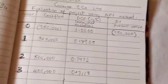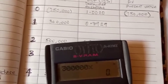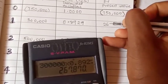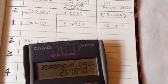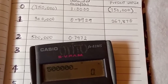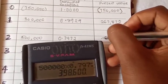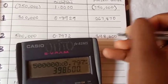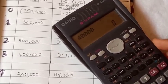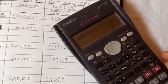750,000 times 1.0 which gave us the same amount. The next is here: year 1, 300,000 times 0.8929, which is 267,870. For the second year, 500,000 times 0.9772, which is 398,600.